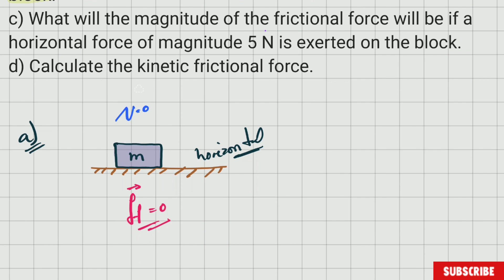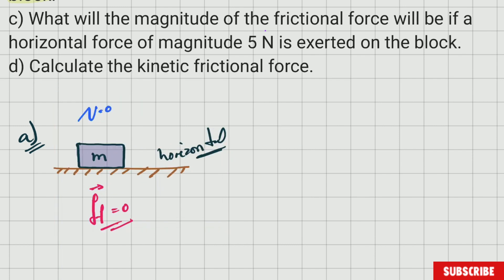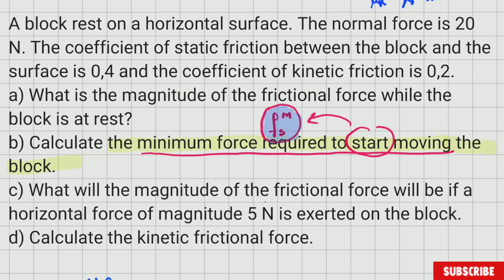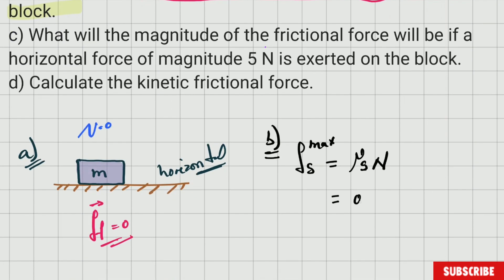Let's work it out. For part B, we're looking for the maximum static frictional force. The formula is: static coefficient of friction multiplied by normal force. Substituting the data: 0.4 × 20.